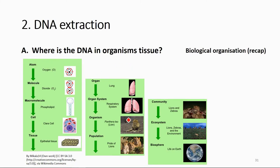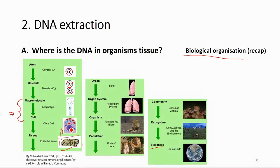So where is the DNA? If you look at the biological organization — which you have learned in secondary school — you have higher levels down to the macromolecule and cell level. In this course we mainly deal with macromolecules and cells. A tissue is made of many cells, and in each cell you have different organelles where you can find the DNA.